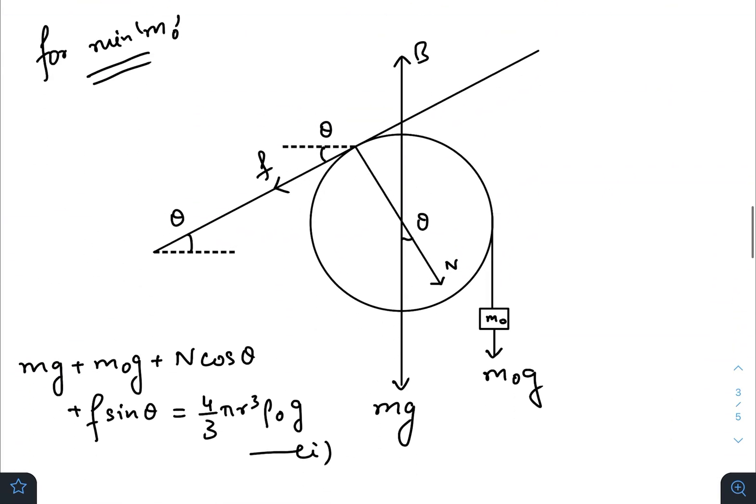Now, for minimum value of m0, this would be the free body diagram. Because if you start decreasing the value of m0, for minimum value of m0, we need to take its maximum torque. So you cannot put m0 here, because it will create a less amount of torque. So for maximum torque, the perpendicular distance can be r.